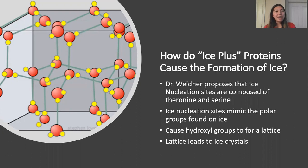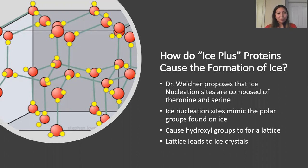As you can see in the picture included, ice crystals form lattices to connect to each other. The proteins on the bacteria mimic this lattice form, and it causes the water to create lattices as well to form ice. Additionally, ice nucleating bacteria draw heat from water, which can cause it to freeze faster.